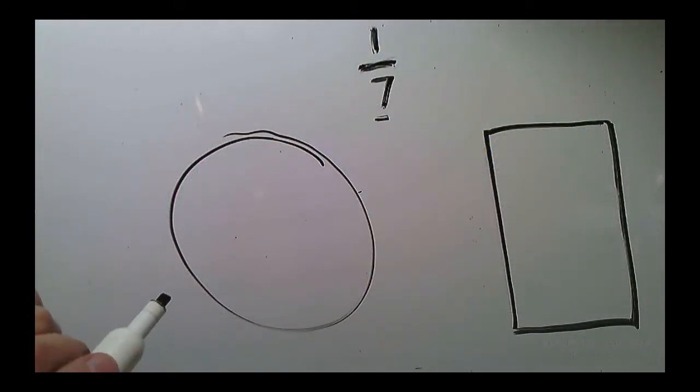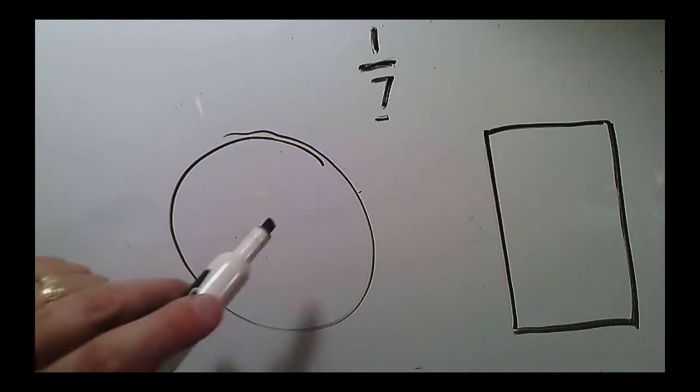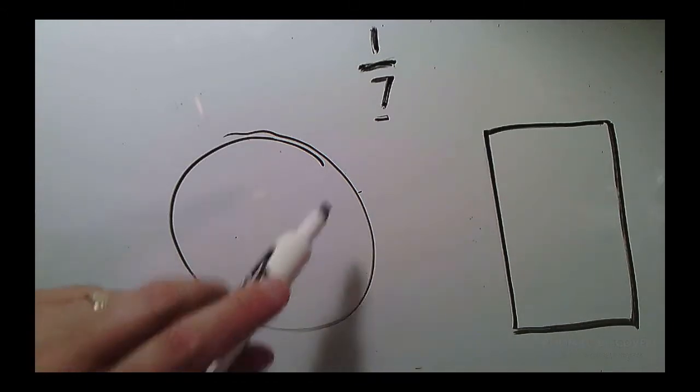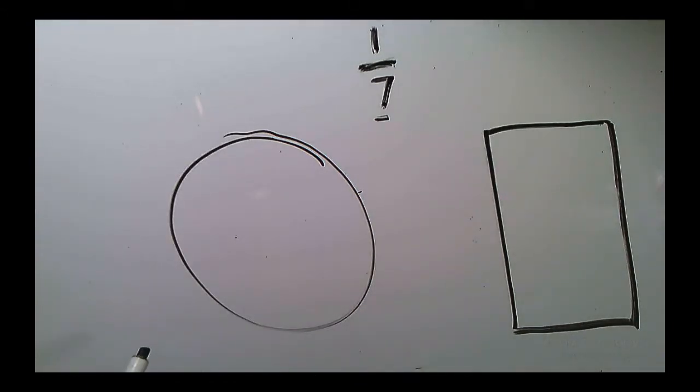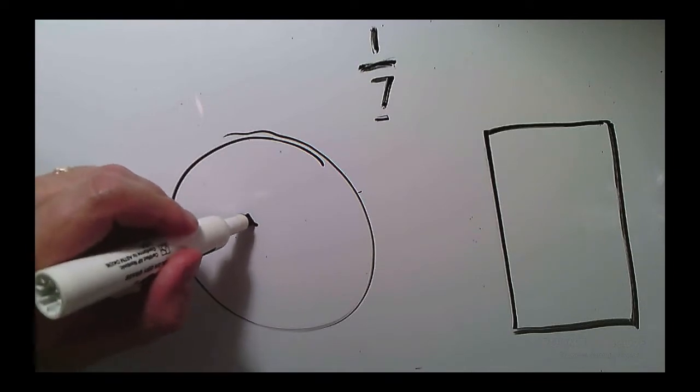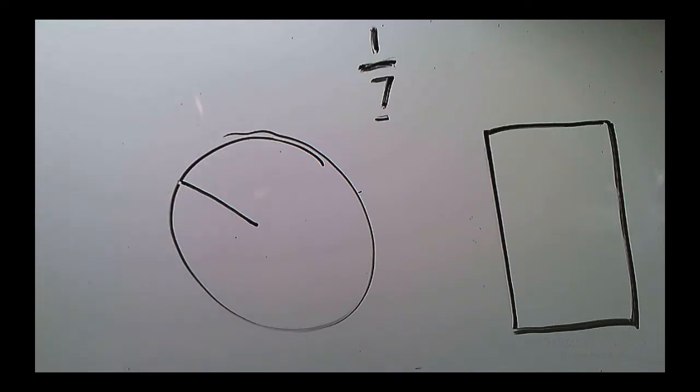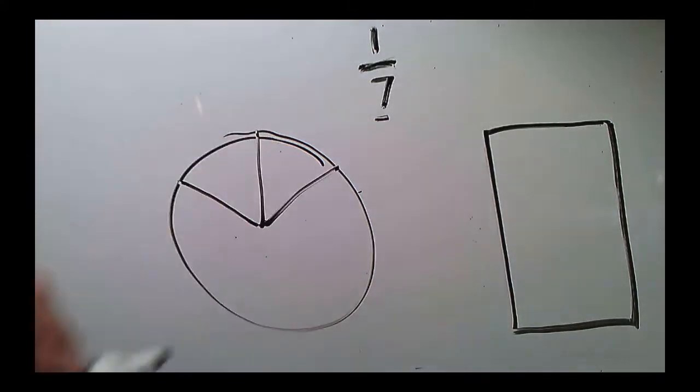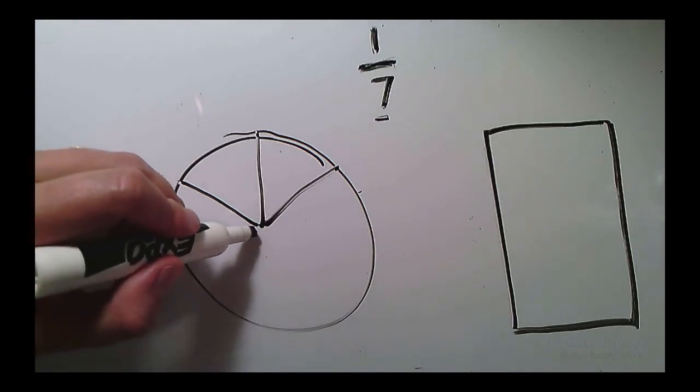Now 1 seventh is where it gets really challenging with the circular model. We can't just use our three cuts and three cuts like we can on the rectangle because we're not cutting all the way through, right?